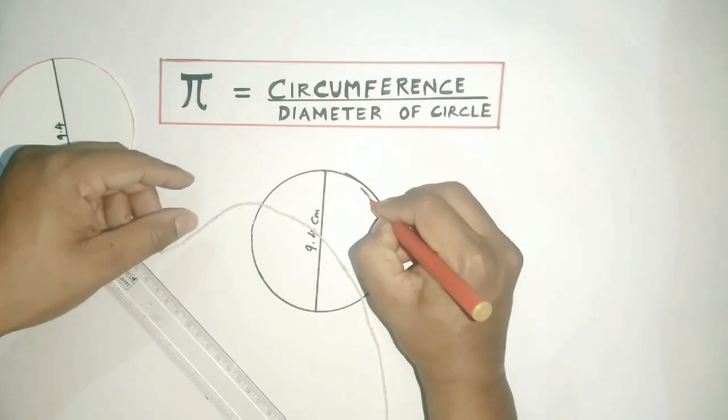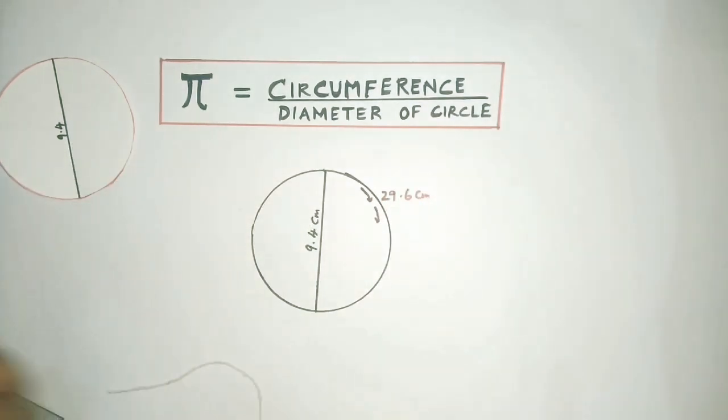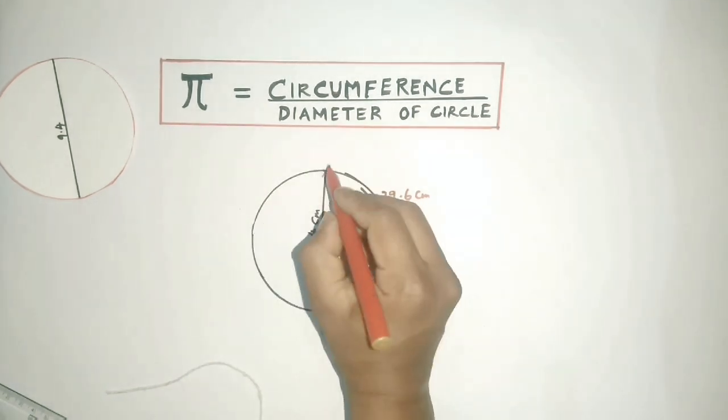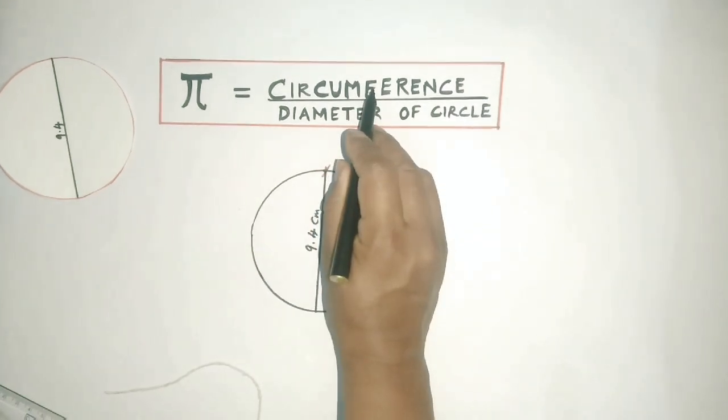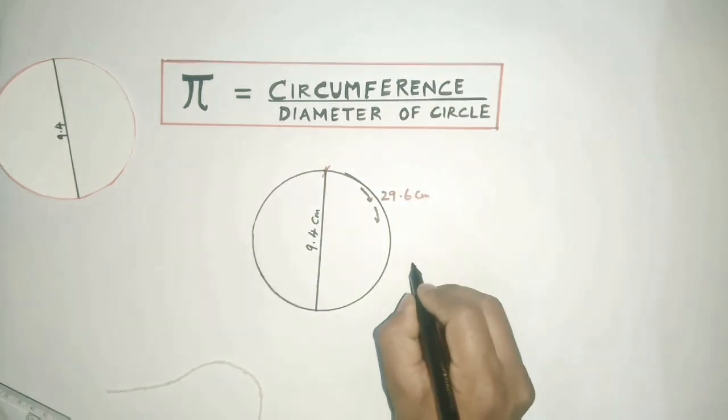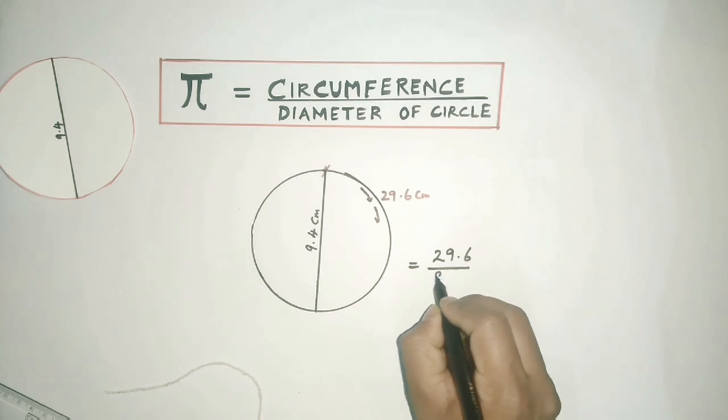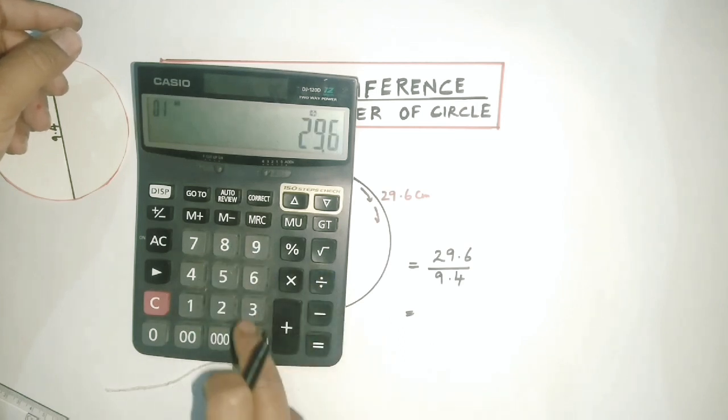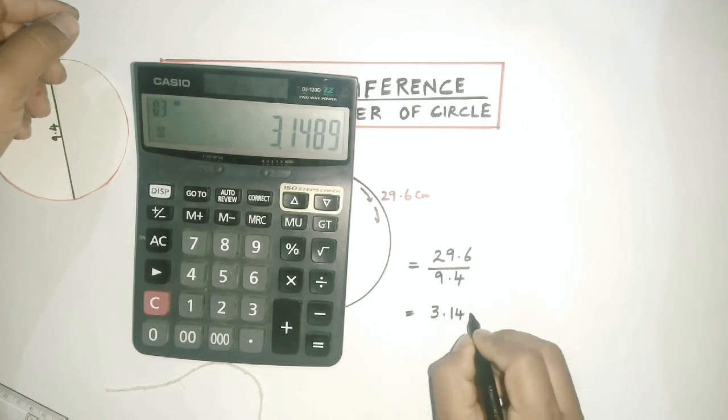Remember, circumference is the length of the curve of the circle. If I start from here, the entire length of this curve ending here is the circumference. Now I simply divide the circumference by diameter to arrive at the value of pi. Here, circumference is 29.6 and the diameter is 9.4. If I calculate using a calculator, 29.6 divided by 9.4, I get 3.1489.